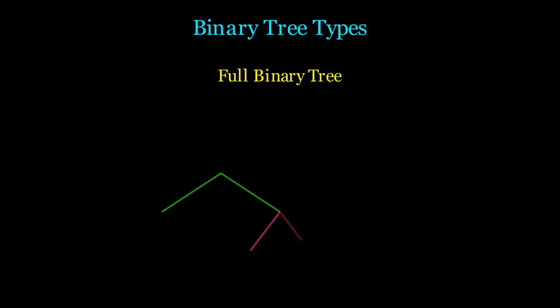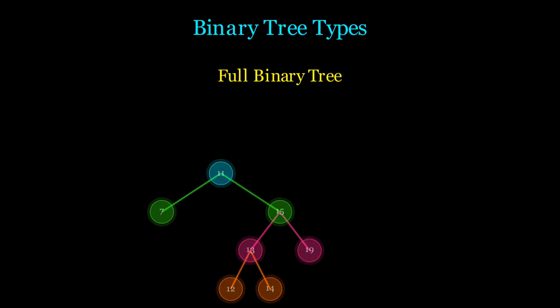Now let's look at the full binary tree. In this type, every node has either zero or two children. No node has just one child.